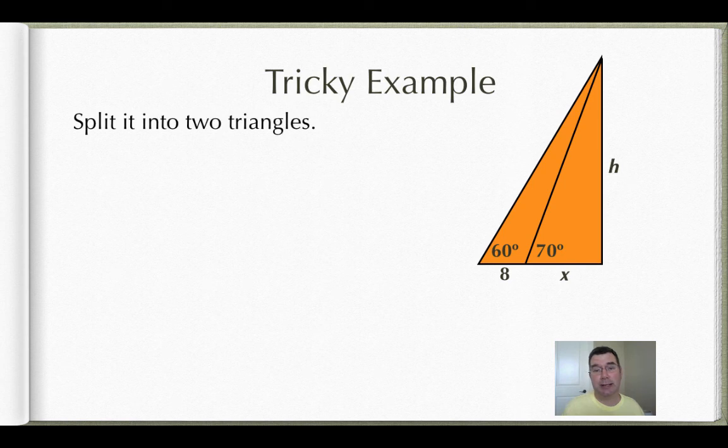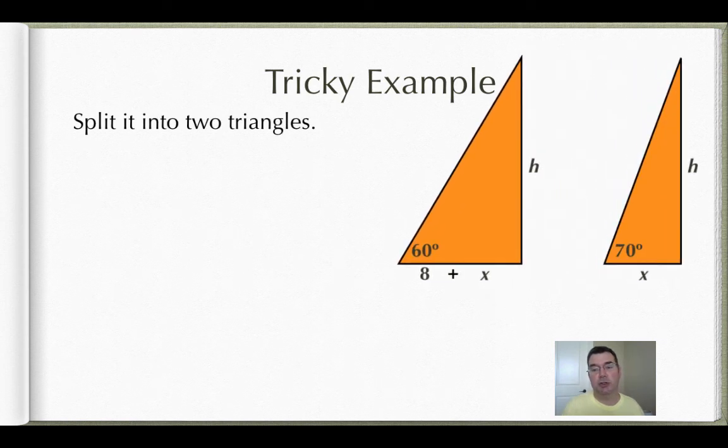So let's split this problem into two triangles. So I have one where the bottom side is 8 plus x, and the right side is h, and the angle is 60 degrees. And then in the second one, the bottom side is just x. The right side is h again, and the angle is 70 degrees.